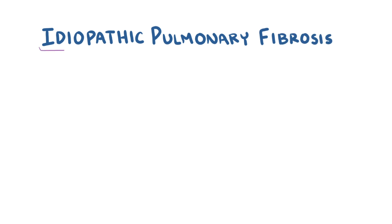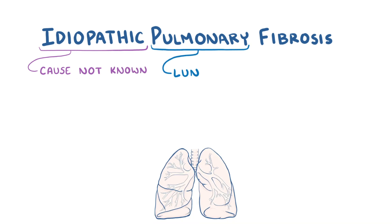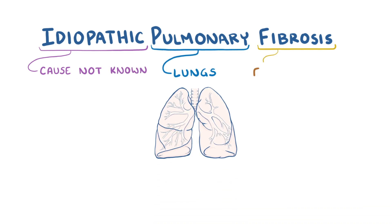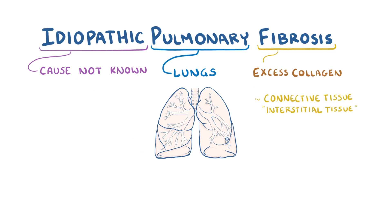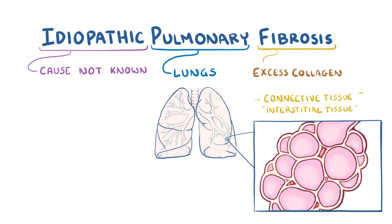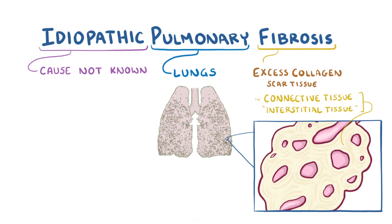Idiopathic pulmonary fibrosis can be broken down into idiopathic, which means a disease without a known cause or mechanism; pulmonary, which refers to the lungs; and fibrosis, which refers to excess collagen in connective tissue or interstitial tissue between cells, usually after tissue damage. So idiopathic pulmonary fibrosis is the ongoing repair process of having excess collagen or scar tissue in the interstitial tissue of the lung.